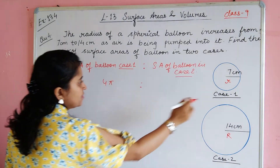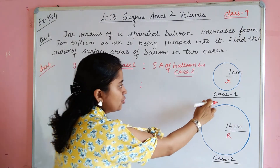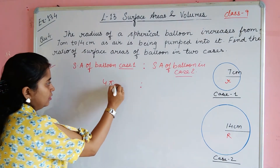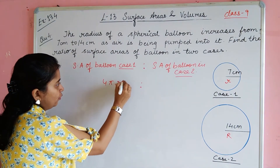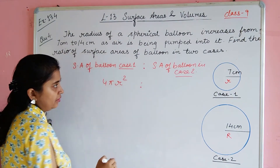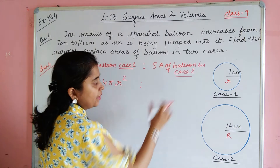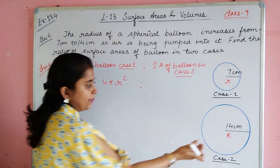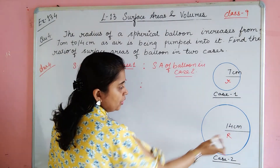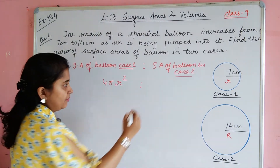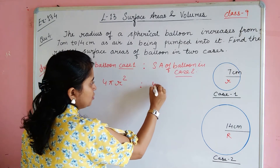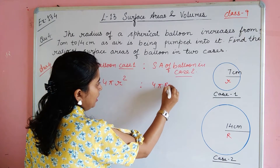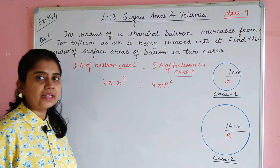The surface area of the balloon is 4πr². In case 1, we have to find the radius of the balloon, that is small r, so the surface area is 4πr². Surface area of balloon in case 2: we have to find the radius of the balloon, so it is 4πR².